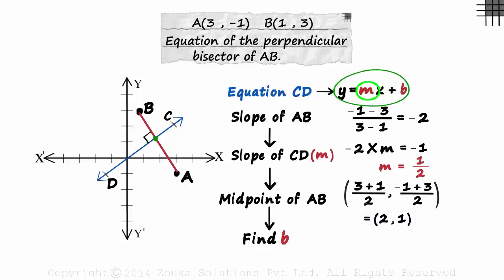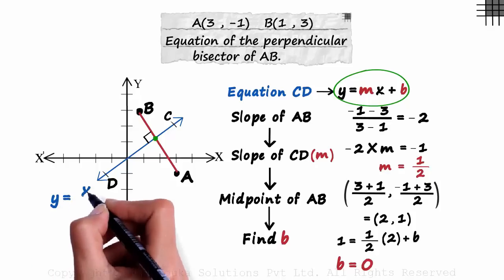Substituting the values of M, X and Y here, we get 1 equals half times 2 plus B. Solving this, we get the value of B as 0. M is half and B is 0. The equation of line CD will be Y is equal to X over 2.